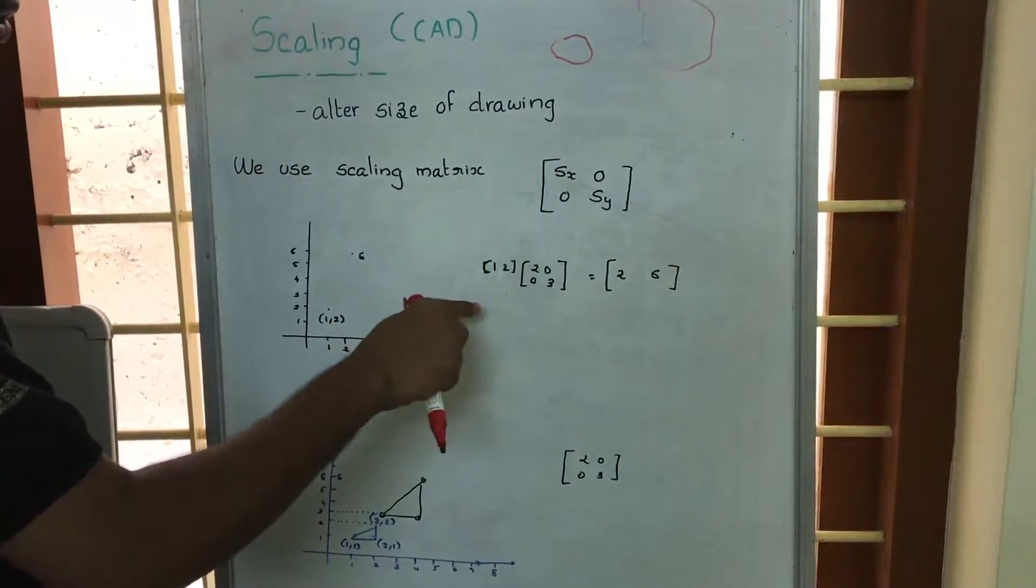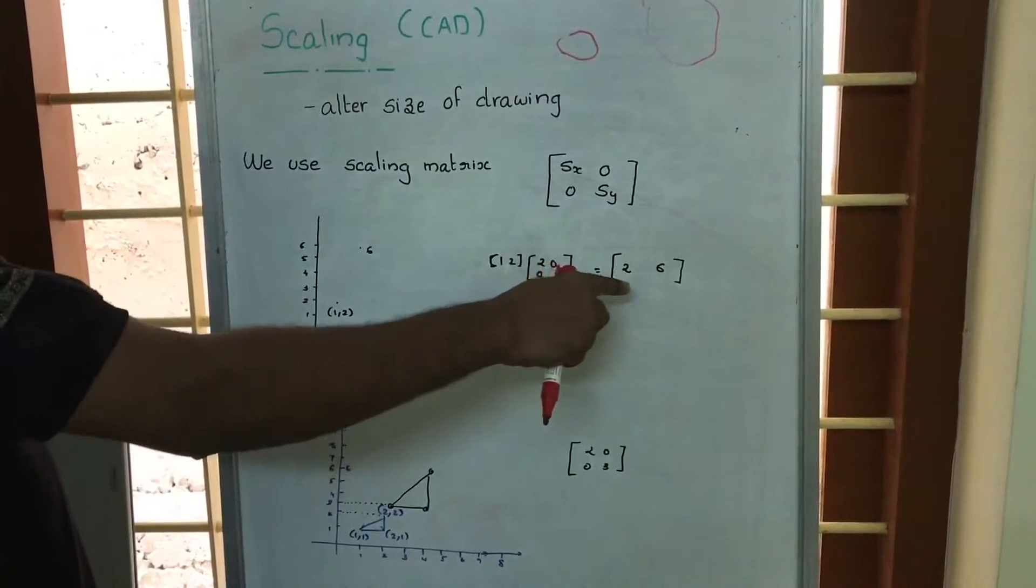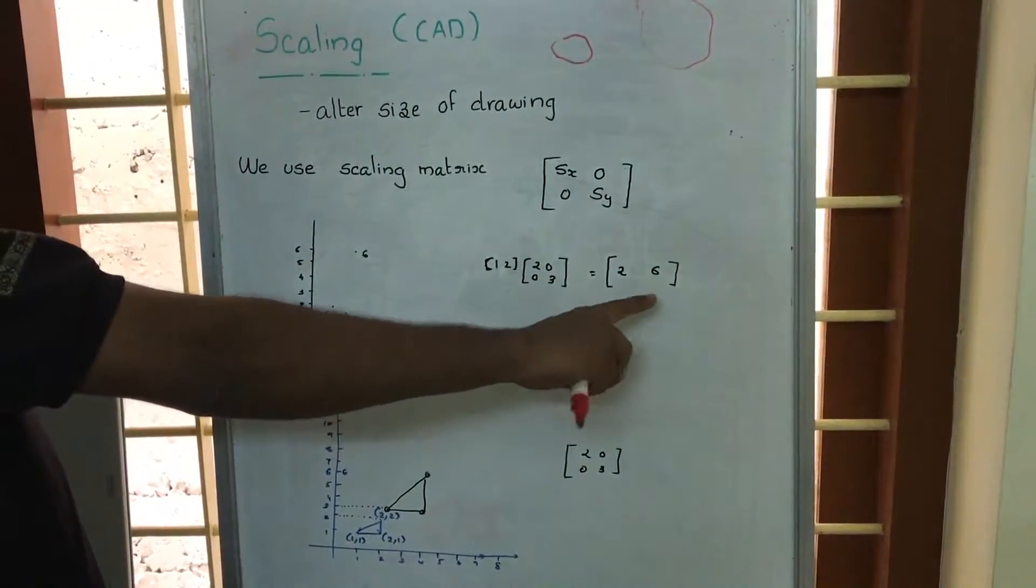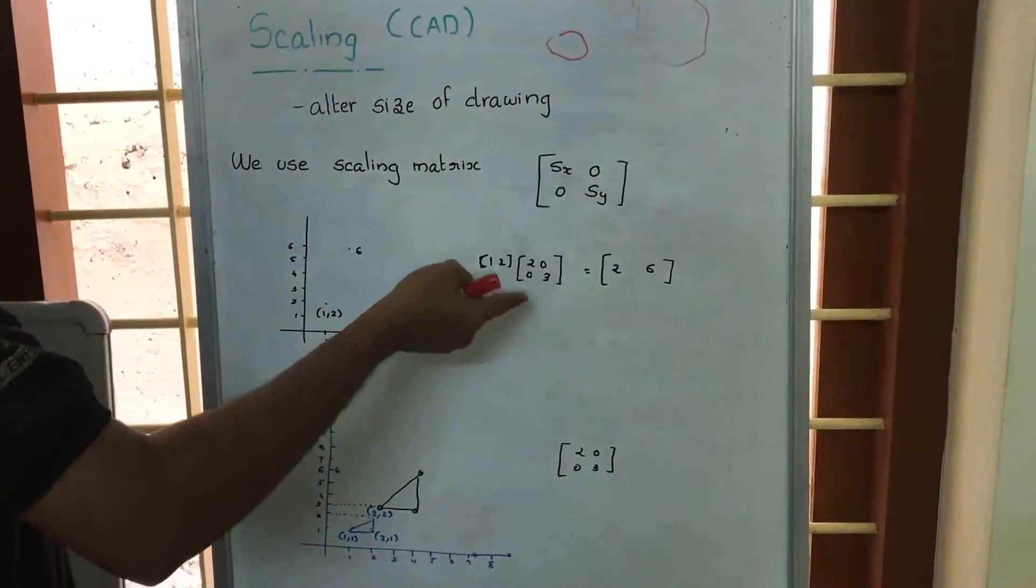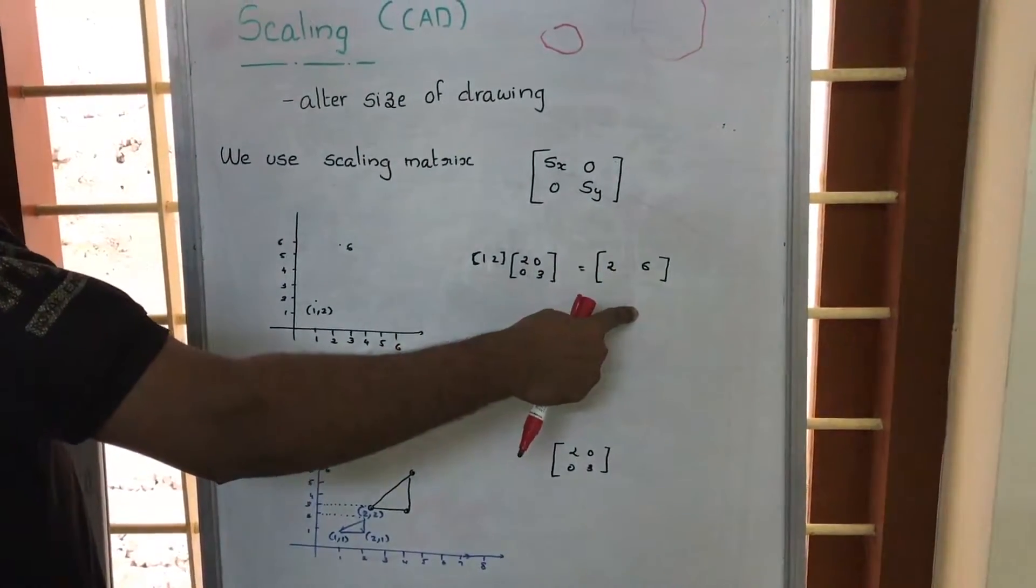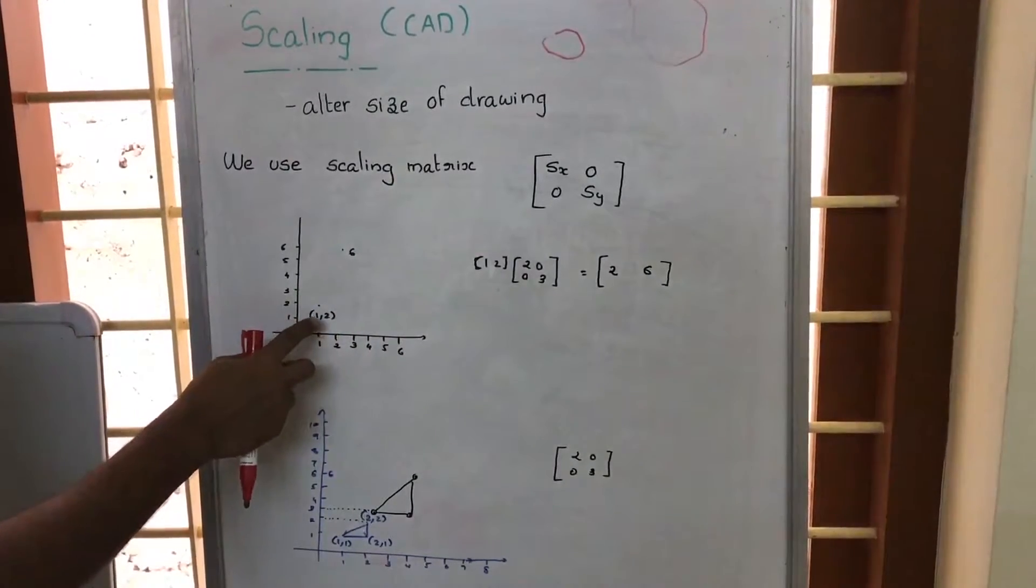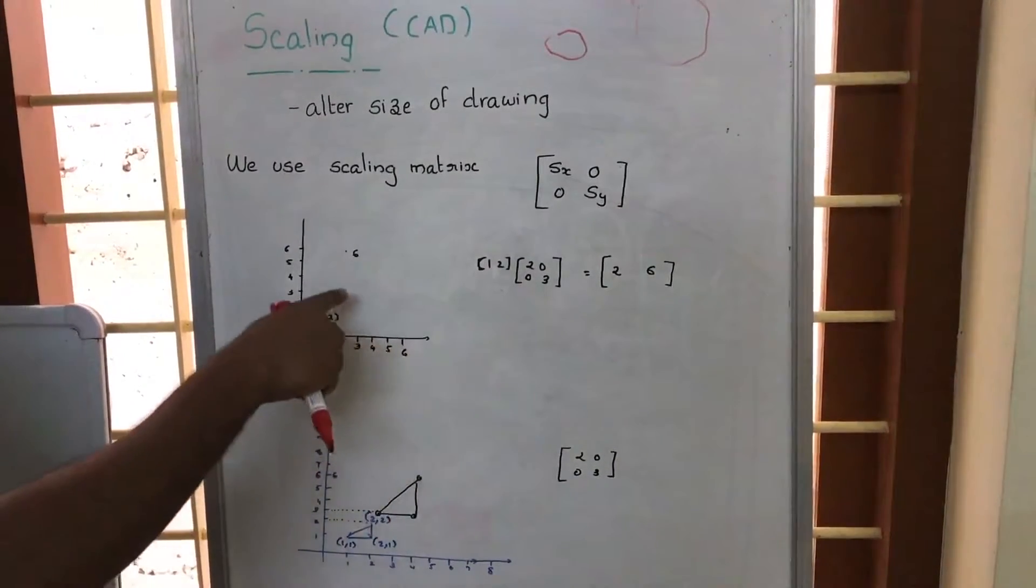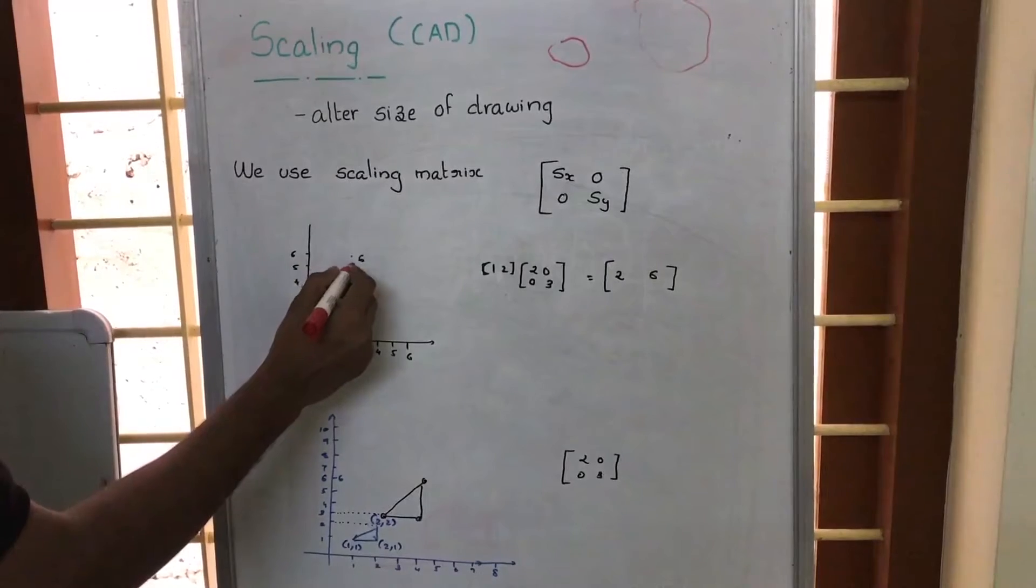So if we are multiplying our point with this scaling matrix we are getting 1 by 2 matrix 2,6. That is the point 1,2 when multiplied with the scaling matrix it changes to another point 2,6. So now we can plot this point. When multiplying with the scaling matrix we will get a new point, this is 2,6.